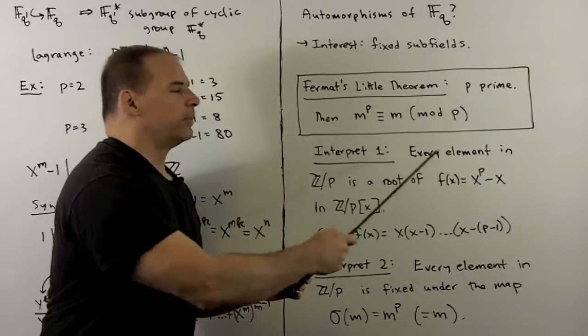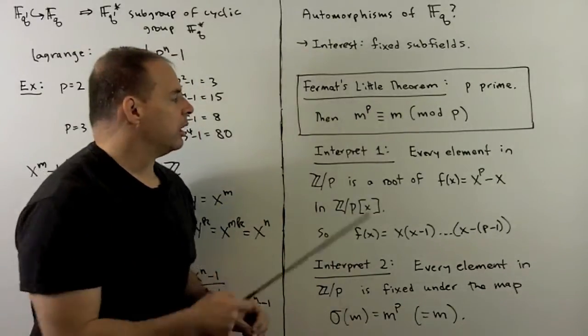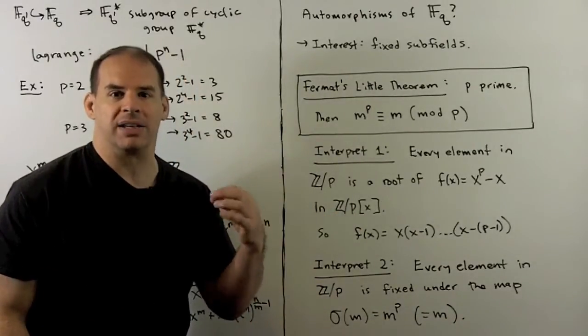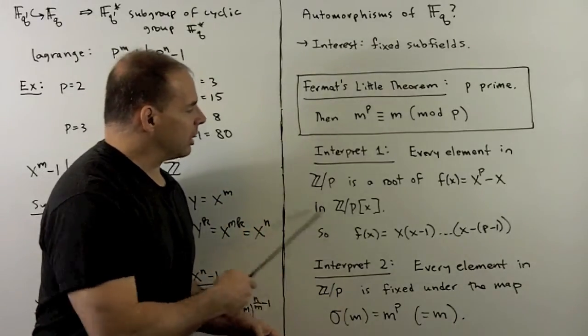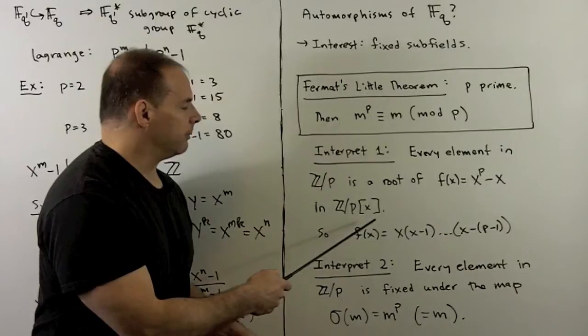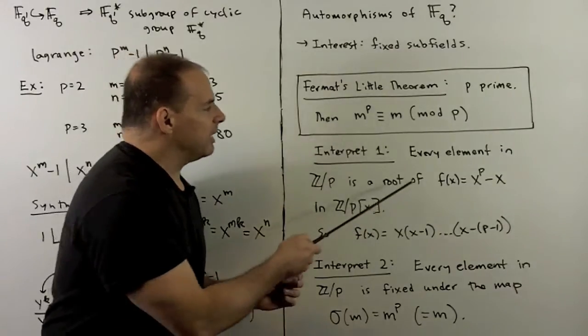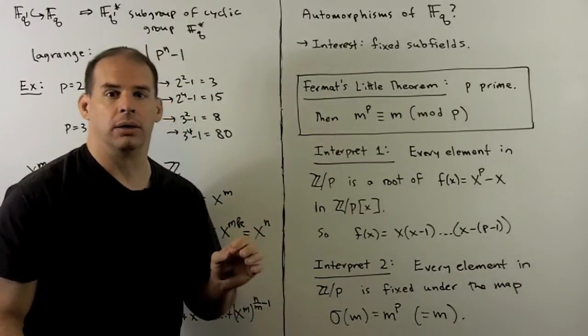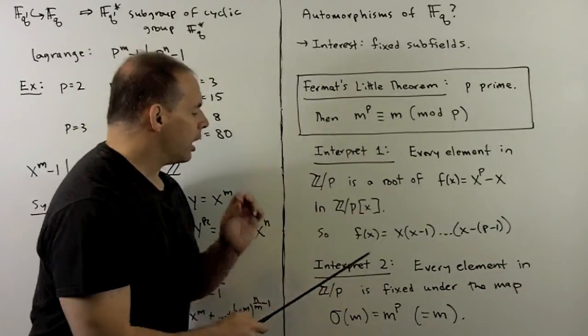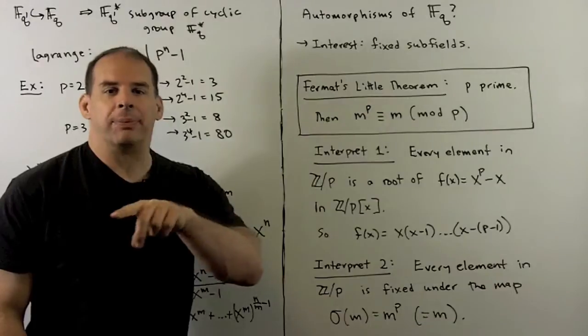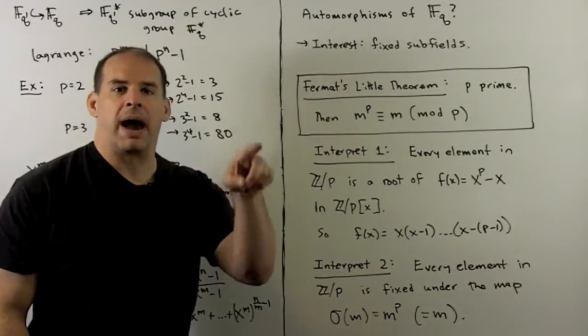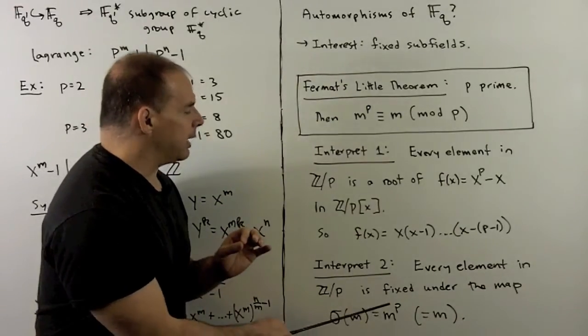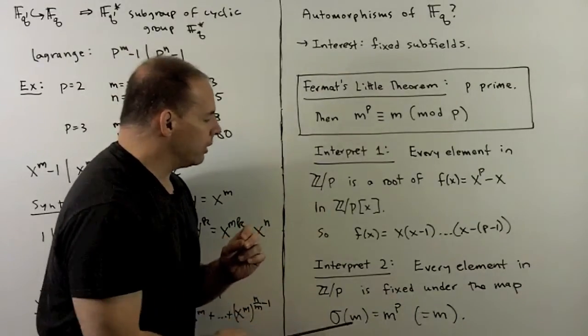Now, there are two ways we can interpret this for finite fields. Interpretation one, we'll have every element in Z mod p is a root of the polynomial f(x) equal to x to the p minus x in Z mod p adjoin x. Polynomials over Z mod p. Now, because of that, we get a complete factorization of this polynomial as x times x minus 1, all the way up through x minus p minus 1. Another interpretation. If I consider the map that just sends elements in Z mod p to their pth power, well, everything is fixed under this map. So this map is just going to send m to m to the p, and then by Fermat, that's just m. So these m's are all going to be fixed.